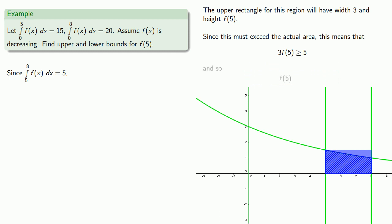Which tells us that f of 5 is greater than or equal to 5 thirds which means that 5 thirds is a lower bound for f of 5.